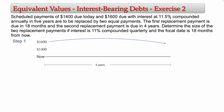The time period is five years, and the interest is 11.5% compounded annually. Since it compounds annually, we don't need to make any division. The number of compounding periods n equals 5. So you compute the future value: 1,600 × (1 + 0.115)^5. Using the calculator, I get 2,757.37.